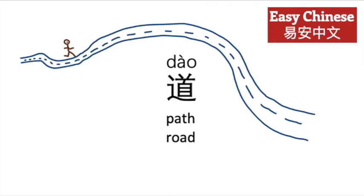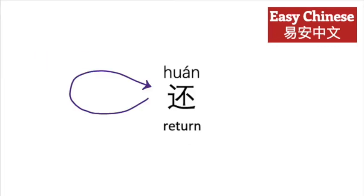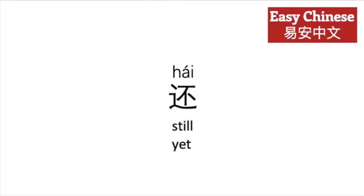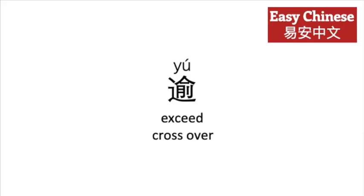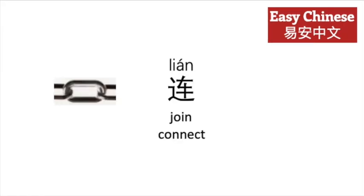Tao, meaning path or road. Juan, meaning return. The same character has a different pronunciation, hai, meaning still or yet. Yu, meaning meet or encounter. Yu, meaning exceed or cross over. Lian, meaning join or connect.